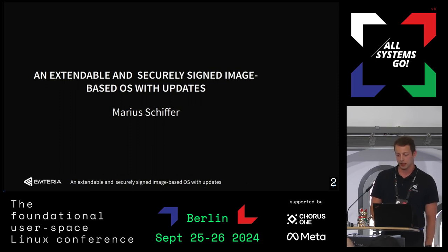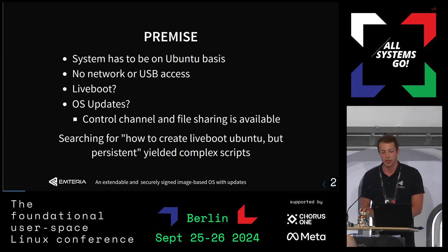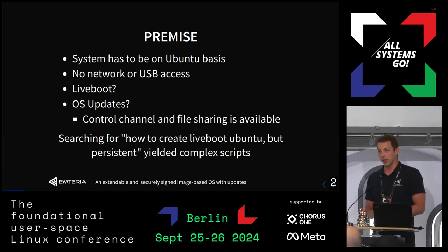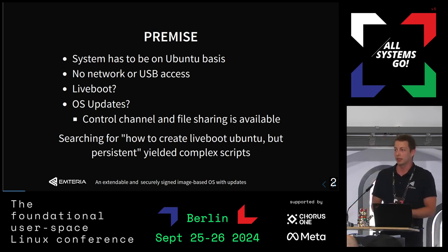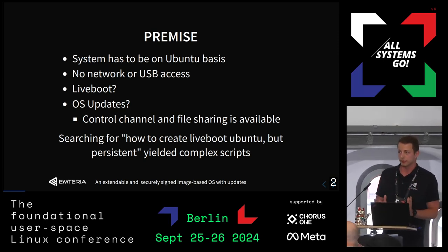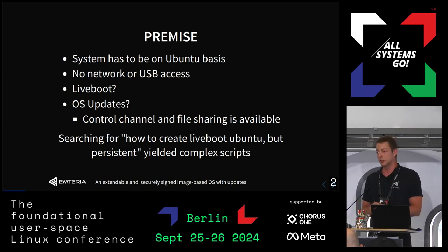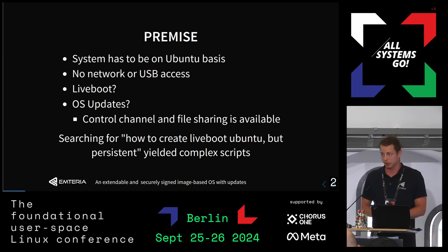Let's get started with the premise. The task here was we had to have a system on a Ubuntu basis. It doesn't have any network or USB access. It has to have liveboot. It has to have OS updates. You're probably wondering how can we have OS updates if we don't even have network or USB access. That is all done through Android itself — we only have a control channel and we can share files. I searched online how to customize a liveboot Ubuntu. It mainly yielded complex scripts. Image generation usually is just complex scripts, and that was not really reliably customizable.